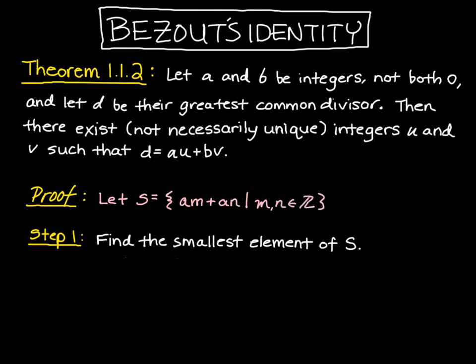What we want to do here is first show that S has a smallest element, and then next show that that smallest element is the greatest common divisor. So let's start with step one. To find the smallest element, we first note that a squared plus b squared equals a times a plus b times b, and so it is actually an element of our set S.